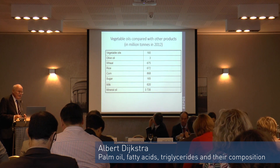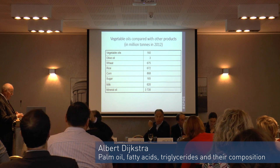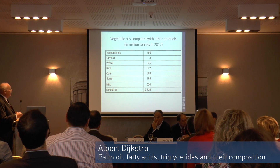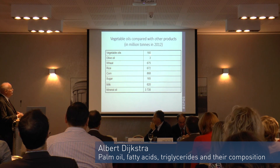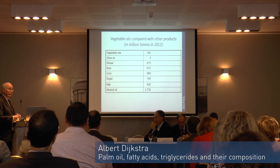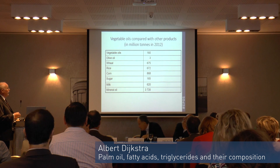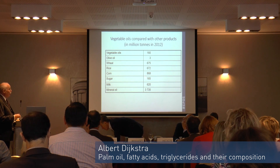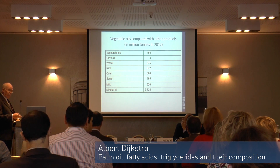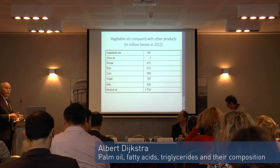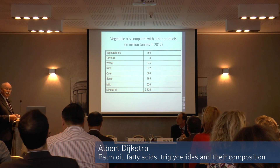Why is it so dominant? Here you have a comparison of major crops. Vegetable oils total about 160 million tons per annum. Olive oil is very small in comparison. This compares with wheat, rice, and corn, which are very large. And the oil seeds themselves, as you saw on the previous slides, are about 450 million tons — sizable figures.